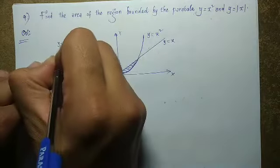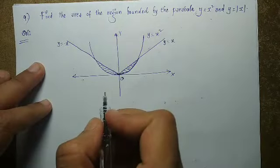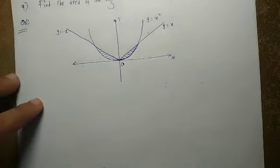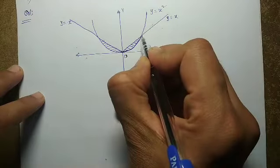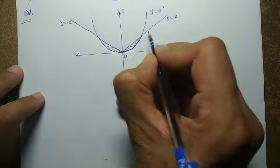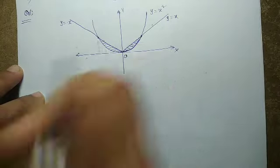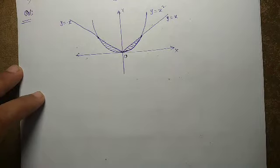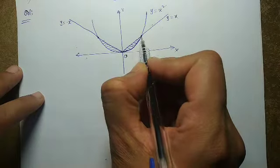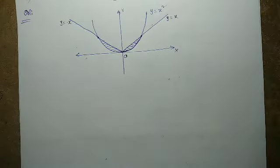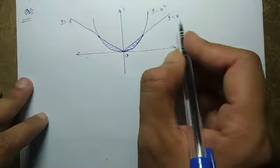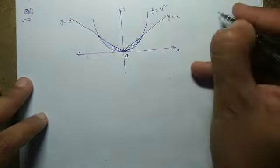We find the points of intersection of y = x² and y = x (in the first quadrant). Setting x² = x gives x² − x = 0, so x(x − 1) = 0, meaning x = 0 or x = 1.